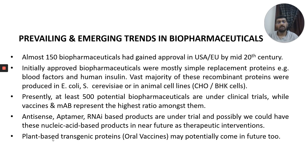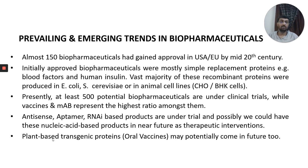Presently, at least 500 different potential pharmaceuticals are under clinical trial, and the vast majority of them are actually vaccines and monoclonal antibodies. On the other hand, many nucleic acid-based products are evolving as future therapeutic inventions, including antisense aptamers and RNAi-based products — most of these are also under clinical trials. Last but not least are plant-based transgenic proteins, normally called oral vaccines, which scientists are working on and which we could potentially have as therapeutic interventions in the future.